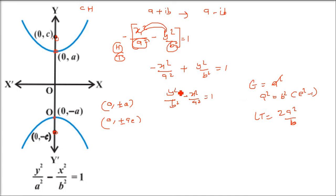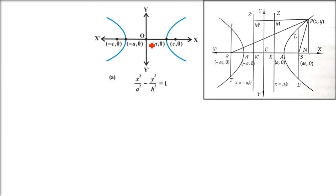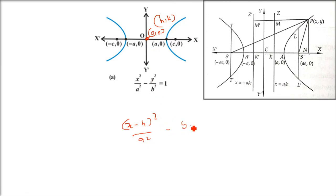One more thing: if the center is not at the origin but at some point (h, k), the equation becomes (x−h)²/a² − (y−k)²/b² = 1. This is all about the hyperbola. Thank you so much, take care of yourself.